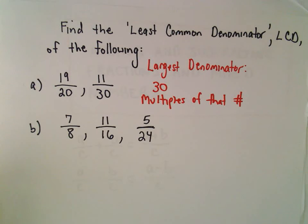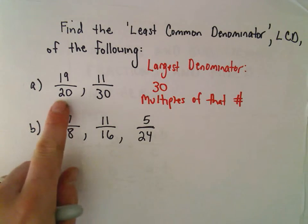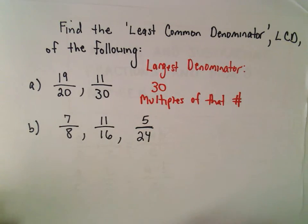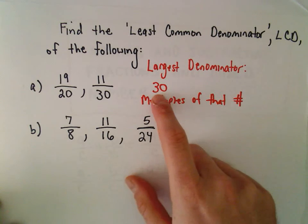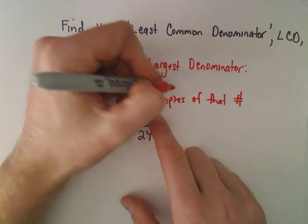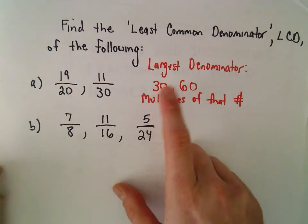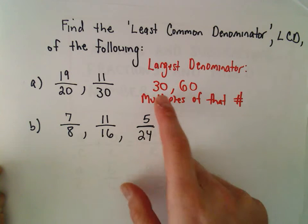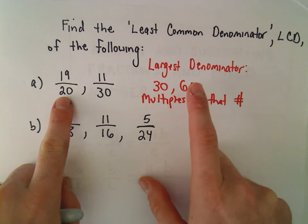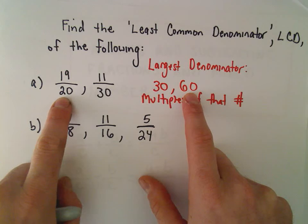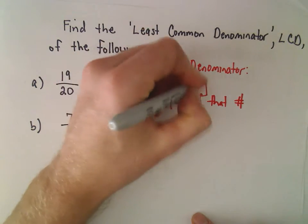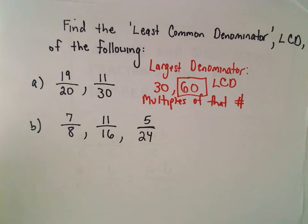I basically think, when I'm looking at multiples of that number, does the other denominator go into that number? So the denominator is 30 — does 20 go into 30? No, it definitely doesn't. Let's look at a multiple of 30, say 60. A multiple means you're just multiplying by a whole number, so two 30s would give us 60. And now I think: is 60 divisible by 20? Yes, it is. 60 is also divisible by 30. So this is going to be our least common denominator in this case.